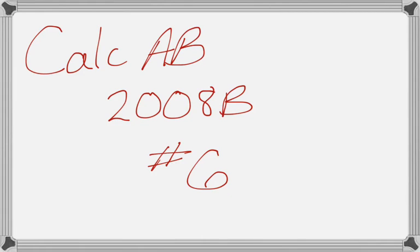This is number 6 from the 2008 Form B Calc AB exam, and it's an implicit differentiation problem. We start with this curve that's implicitly defined. They give us the derivative and tell us to verify it, so I'm just going to take the derivative here.